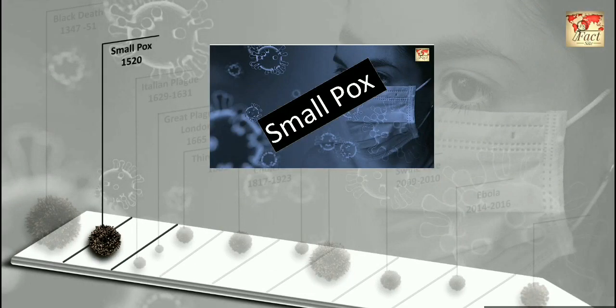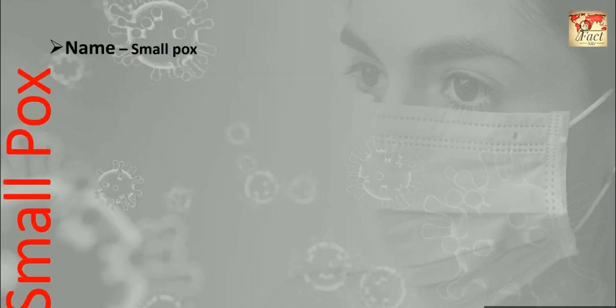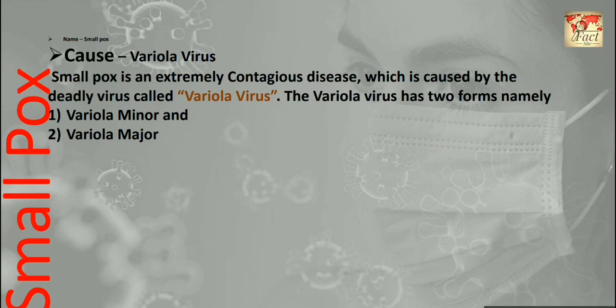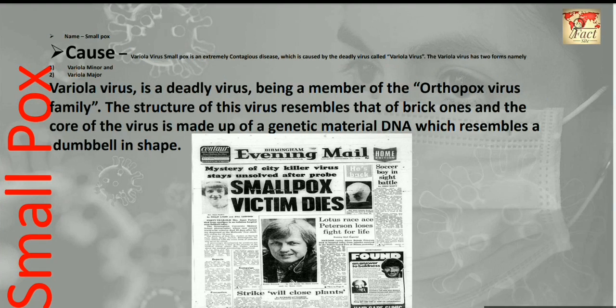Now let's discuss about this hazardous disease. The name of this virus is Smallpox. The cause of smallpox is the Variola virus. Smallpox is an extremely contagious disease caused by the deadly Variola virus, which has two forms: Variola Minor and Variola Major. Variola virus is a deadly virus and a member of the orthopox virus family. The structure of this virus resembles a brick and the core of the virus is made up of genetic material.